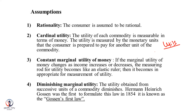Utility can be measured with the help of utils. This unit is measurable in monetary terms — one util is equal to one rupee, 70 utils is equal to 70 rupees. Therefore, the marginal utility of money should be constant — it should neither increase nor decrease — as the measuring rod of utility.